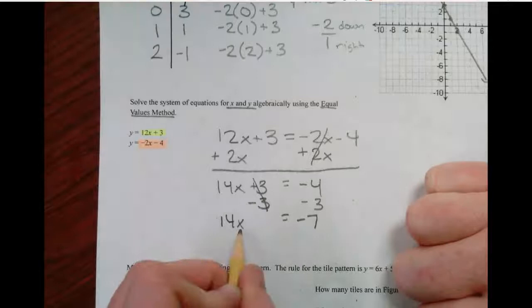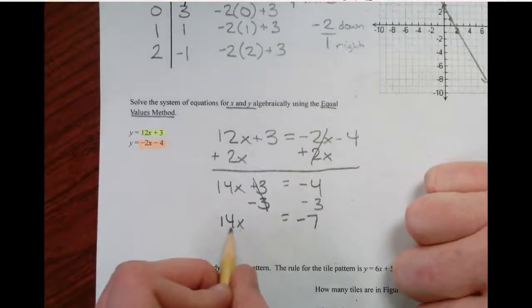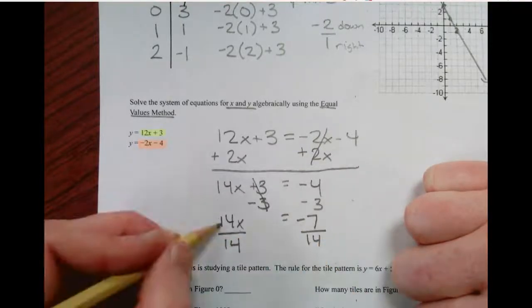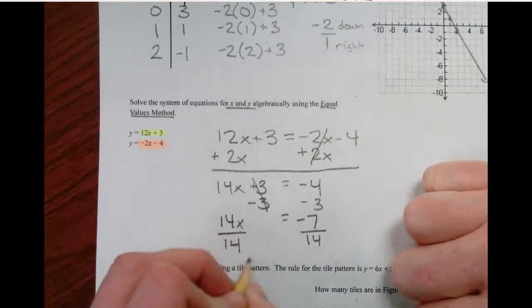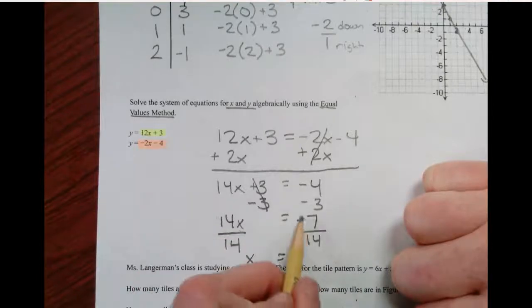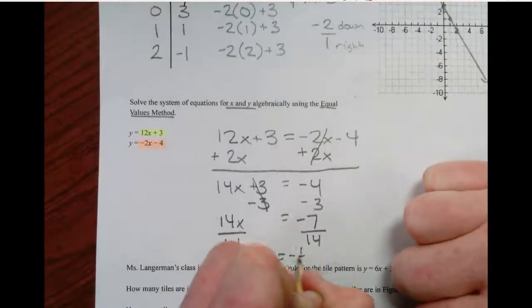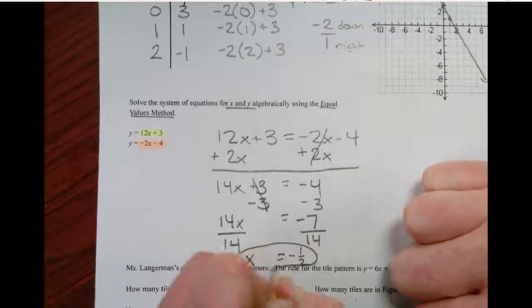So 14x equals negative 4 minus 3 is negative 7. Okay, I need to get x by itself. So this is 14 times x. So I'm going to divide by 14. 14 by 14 is just 1x. That's what we were hoping for. Negative 7 divided by 14. Well, that's negative 1 half. So there's x, negative 1 half.